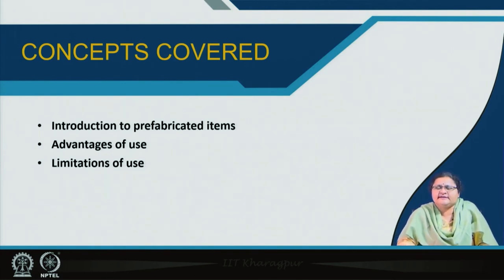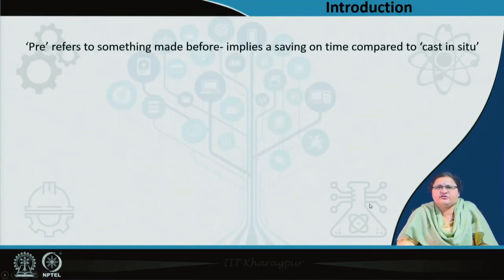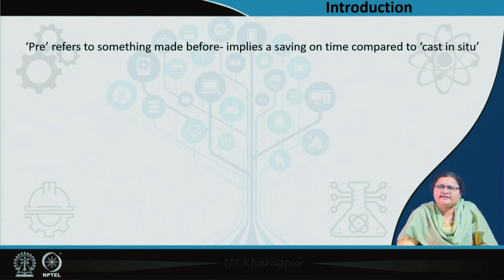In this module we will discuss what prefabricated items are, what are the advantages of their use, and what are the limitations. The prefix 'pre' refers to something made before, implying a saving on time compared to cast-in-situ. The item comes from a factory, and the effort which you had previously done on site is now done there — but the units are not as small as brick size; they will be larger.